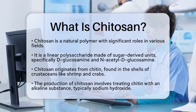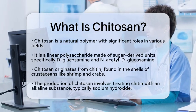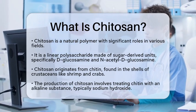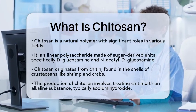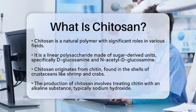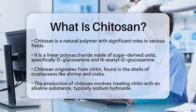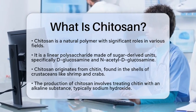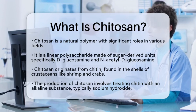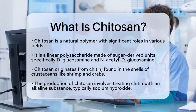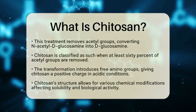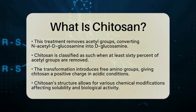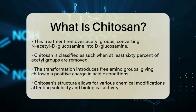Chitosan comes from chitin, a natural polymer found in the shells of crustaceans like shrimp and crabs. To create chitosan, chitin is treated with an alkaline substance, often sodium hydroxide. This process removes acetyl groups from the N-acetyl deglucosamine units, turning them into deglucosamine units. When at least 60% of the acetyl groups are removed, we classify the polymer as chitosan.